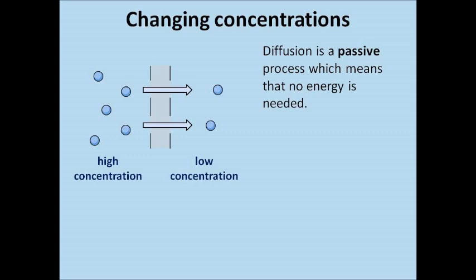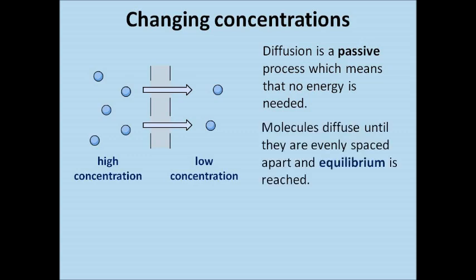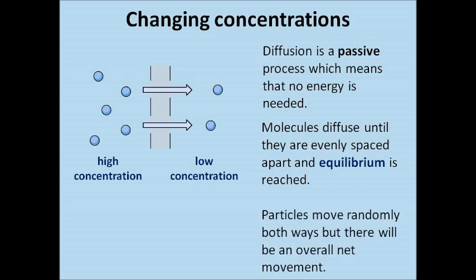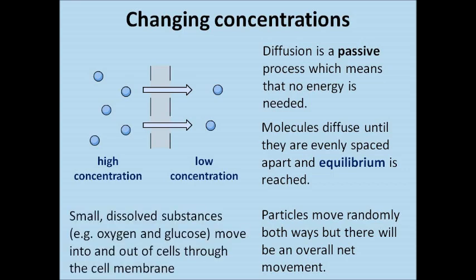Diffusion is a passive process, which means no energy is needed, and the molecules diffuse until they are evenly spaced apart and an equilibrium is reached. The particles move randomly in both directions, but overall there will be a net movement in one direction. Small dissolved substances like oxygen and glucose can move into and out of cells through the cell membrane, but larger particles like starch and proteins can't get through the plasma membrane because they are too large.